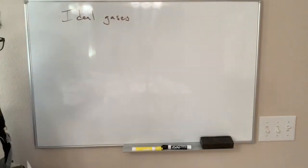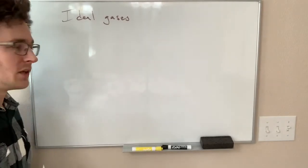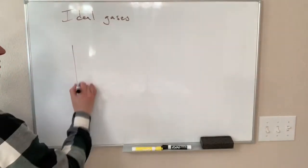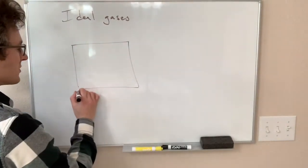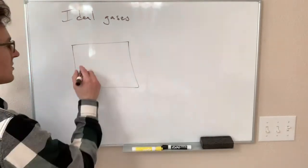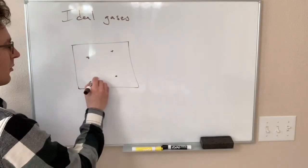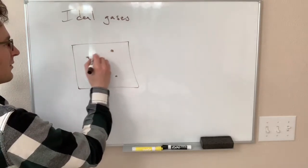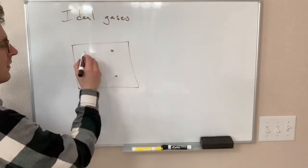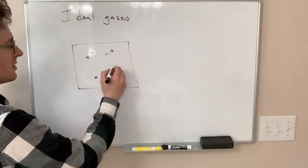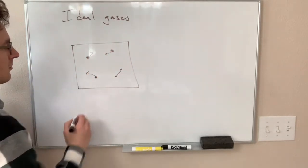The ideal gas model is very simple. You have your molecules, or atoms, gas particles in some container. There are probably more than four but we're just going to stick with a few, and they have some velocities going in different directions.